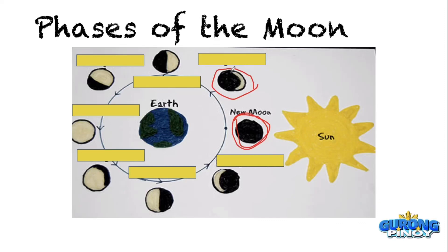I think you'd all agree that the term we can use is waxing, because we started with a new moon when we can't see any part of the moon. The second phase, we can already see some parts of it, so we can say that the moon is becoming bigger. So we call this a waxing moon. Now, what type of waxing moon is this — waxing gibbous or waxing crescent?